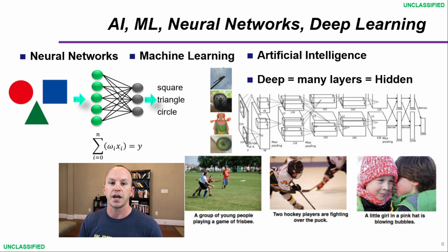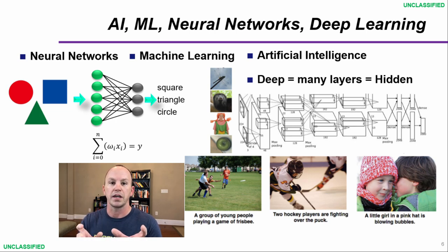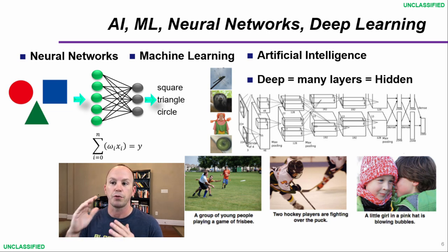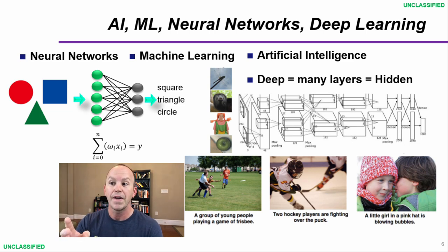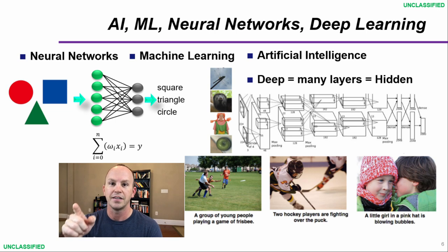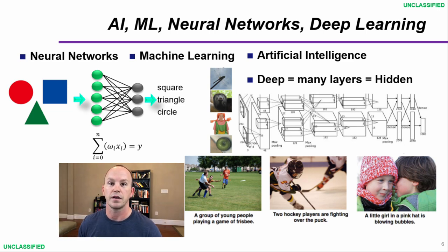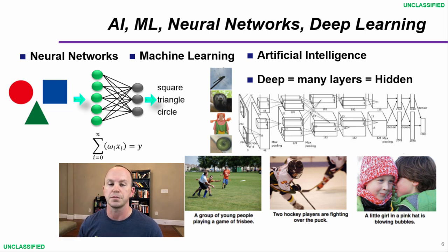I have three examples where you can see this deep neural network is able to tell that a group of young people is playing a game of frisbee. If you stop and think about that, it's absolutely mind-blowing that this computer is able to recognize there's a person, that there's a group of people, they're playing a game, and that little white dot is a frisbee — some humans probably couldn't even tell that.